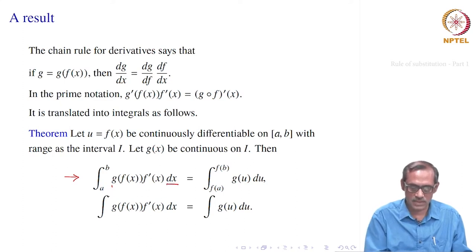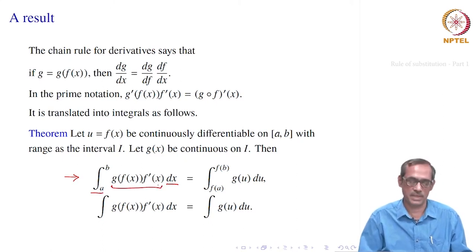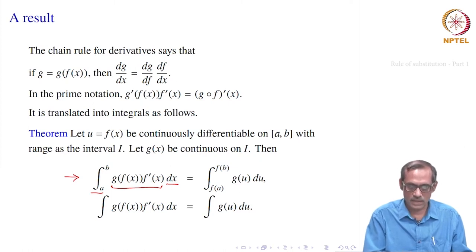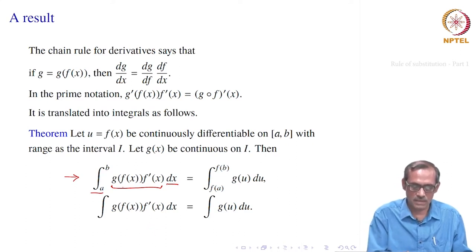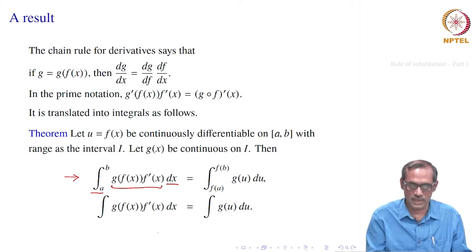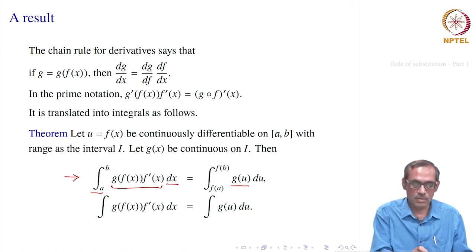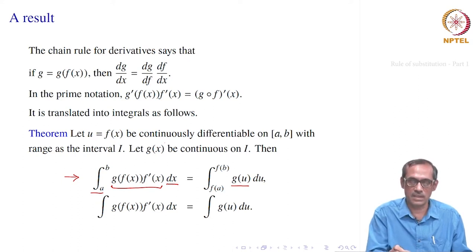In this integral, the notation a to b with dx is our notation. The integrand is g(f(x)) · f′(x). This looks like the chain rule. If we go to dg/dx = dg/df · df/dx, it will be equal to g′(u), and it translates to: let u = f(x) — these are the necessary conditions we need to make this composition work.